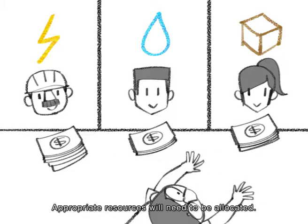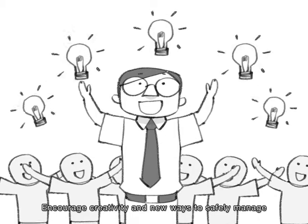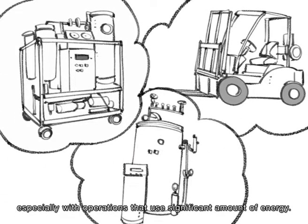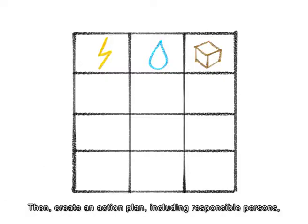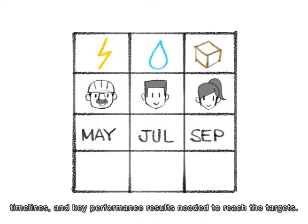Encourage creativity and new ways to safely manage and operate your factory, especially with operations that use significant amounts of energy. Then create an action plan including responsible persons, timelines, and key performance results needed to reach the targets.